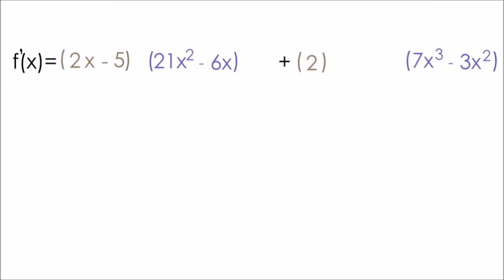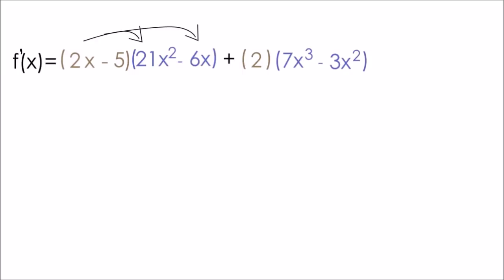All right, so now we have to do a little bit of algebra to simplify this even further. The first thing I'll do is distribute the 2x minus 5 with the 21x squared minus 6x. If we FOIL and multiply all of these terms together, we get 42x cubed minus 12x squared minus 105x squared plus 30x.